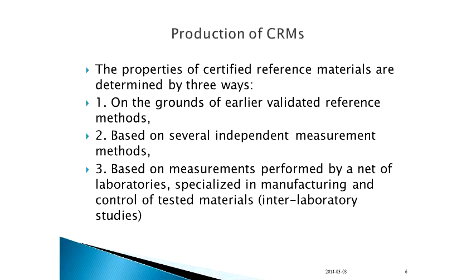We can say some words about the production of CRMs. They can be determined by three ways: first, on the grounds of earlier validated reference methods existing and known for years; second, they must be based on several independent measurement methods; and third, they must be based on measurements performed by a network of laboratories specialized in manufacturing control of tested materials and involved in interlaboratory studies.